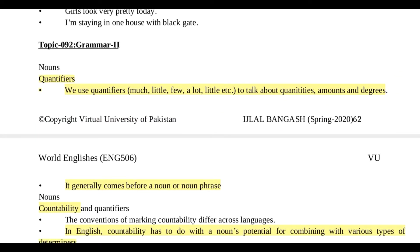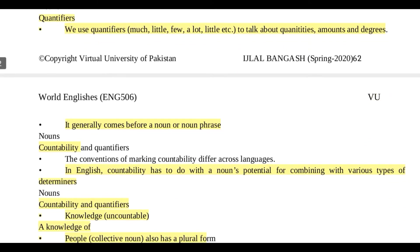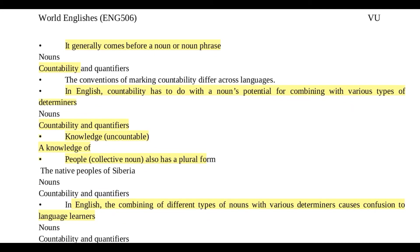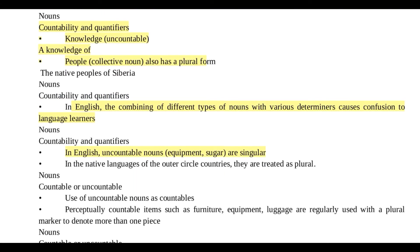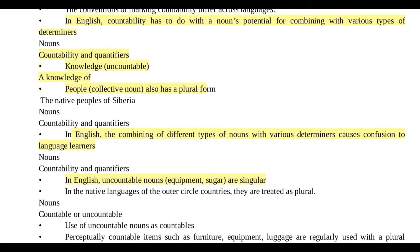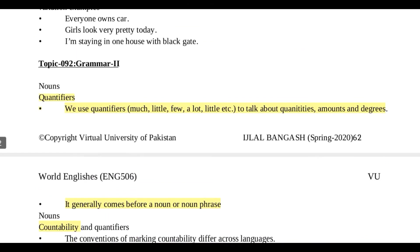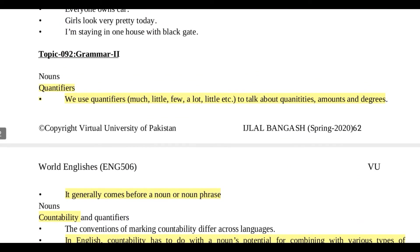Quantifier generally comes before a noun or noun phrase۔ اس کے علاوہ، countability اور quantifiers کے بارے میں بتایا گیا — nouns دو طرح کے ہوتے ہیں: countable اور uncountable۔ Countable وہ ہیں جنہیں ہم count کر سکتے ہیں، اور uncountable وہ جیسے rice، water، یا feelings — انہیں count نہیں کیا جا سکتا۔ Countability has to do with the noun's potential for combining with various types of determinants۔ Knowledge ایک uncountable چیز ہے۔ Students یہاں confused ہو جاتے ہیں کیونکہ کچھ چیزیں singular ہوتی ہیں لیکن uncountable شمار ہو جاتی ہیں۔